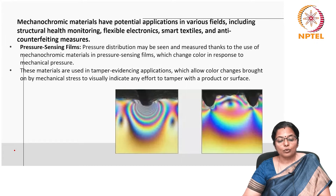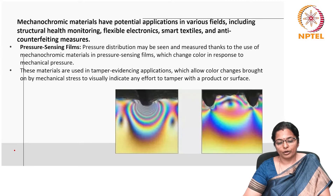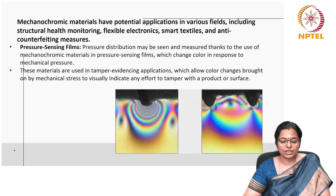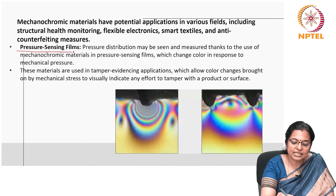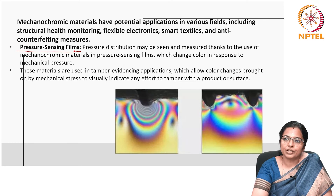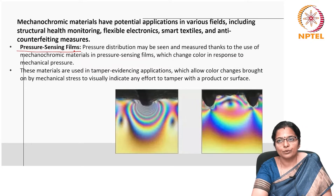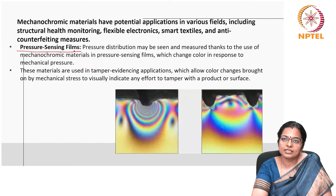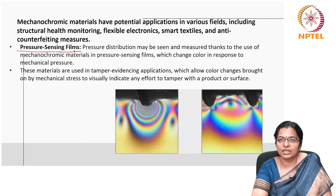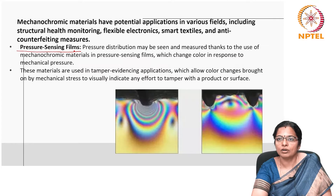Mechanochromic materials have potential applications in various fields including structural health monitoring, flexible electronics, smart textiles, and anti-counterfeiting measures. Pressure distribution may be seen and measured thanks to the use of mechanochromic materials in pressure sensing films — these change color in response to mechanical pressure. These materials are also used in tamper-evidencing applications, where color changes brought on by mechanical stress visually indicate any effort to tamper with a product or surface.